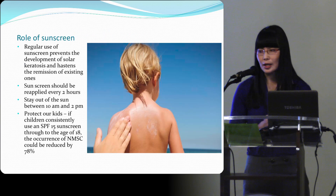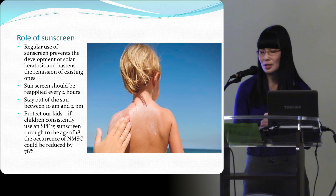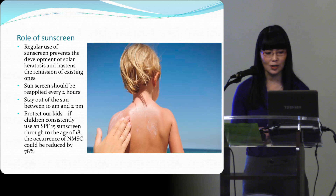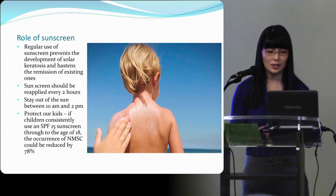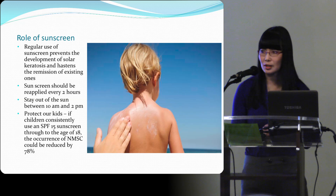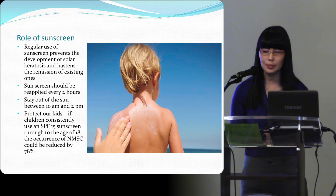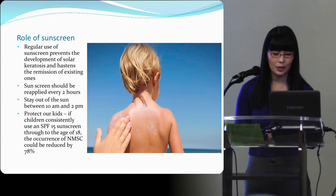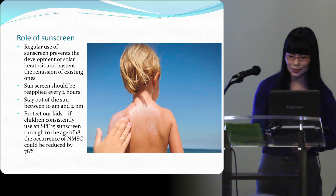Counsel your patients on the role of sunscreen — even if they're 70, consistent sunscreen use can reduce the amount of actinic keratosis they have by 25%. Tell them to apply it every two hours and to avoid the sun between 10am and 2pm. Most importantly, protect kids: consistently applying SPF 15 sunscreen to children up to age 18 can reduce the occurrence of non-melanoma skin cancers by 70%.